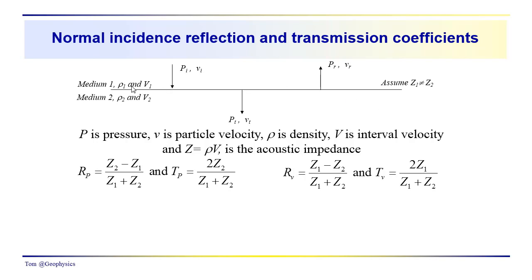We can imagine a trivial case where we could have different densities and velocities and yet their products could be the same, but we're assuming that Z1 and Z2 are significantly different from each other. We've also been talking about the properties of the wave front — the pressure disturbance propagating down through the subsurface, and also the particle velocities, or the displacement of particles from their equilibrium position as the wave propagates through the subsurface.